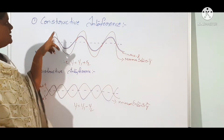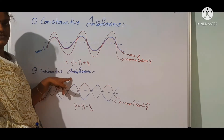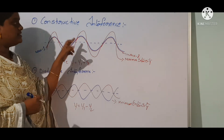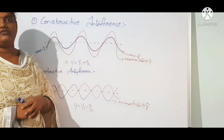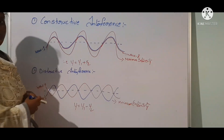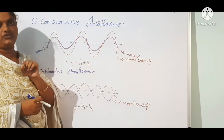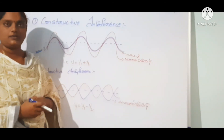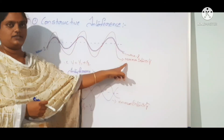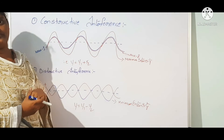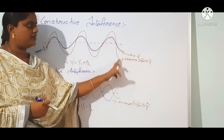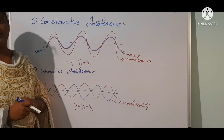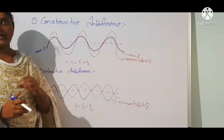Interference is of two types. Number one is constructive interference, and number two is destructive interference. In constructive interference, two waves from two sources propagate in the same direction, resulting in maximum intensity. The resultant displacement is y = y1 + y2, and a bright fringe is formed.